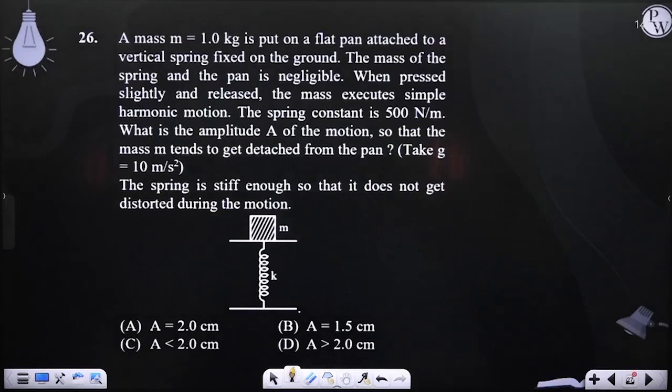Question number 26. A mass m = 1 kg is put on a flat pan attached to a vertical spring fixed on the ground. The mass of the spring and pan is negligible. When pressed slightly and released, the mass executes vertical harmonic motion. The spring constant is 500 N per meter.